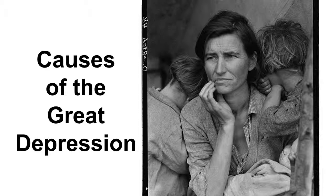Alright, causes of the Great Depression. As it implies, it was a downturn. Depression is a low point — it is a low point in the economy. This image here is one of the most famous images from the Great Depression: the migrant mother and her children. We'll get more into this week the effects of it, but today we're looking at what caused this economic downturn.